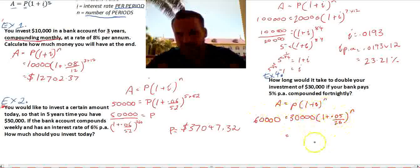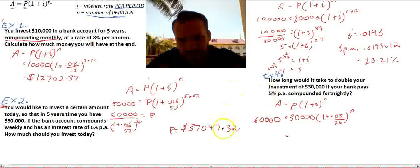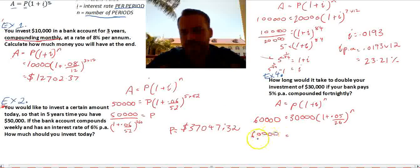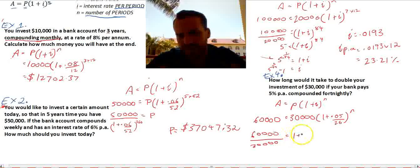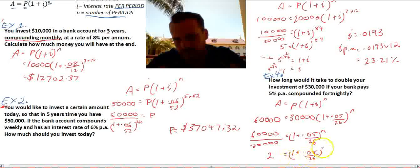Okay. So, 60,000 divided by 30,000. Obviously, that's going to give me 2. 1 plus 0.05 over 26 to the power of N. So, 2 equals 1 plus 0.05 over 26 all to the power of N.